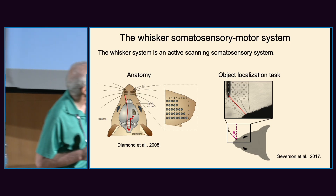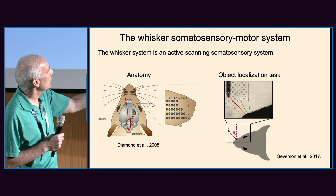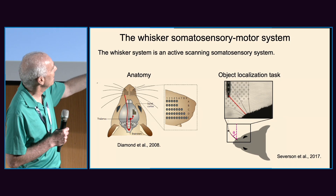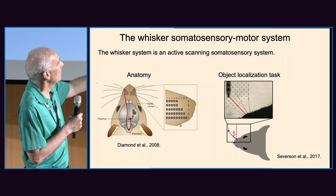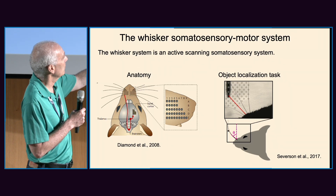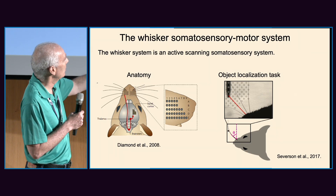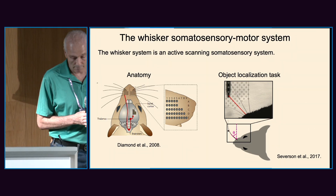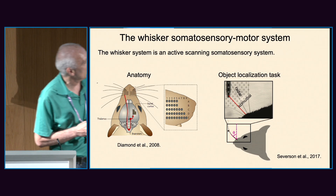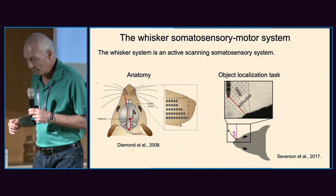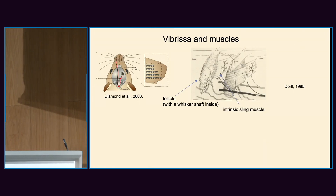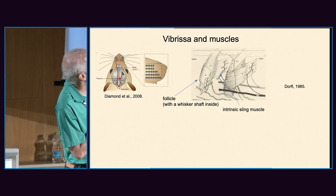What you see here is a putative bar that emerges from below. There are many positions the bar can take. The whisker bends as the animal moves the whisker, and from the moment and forces on the whisker shaft, the animal can estimate the azimuthal and radial position of the bar. So the question is: how can the animal do it?